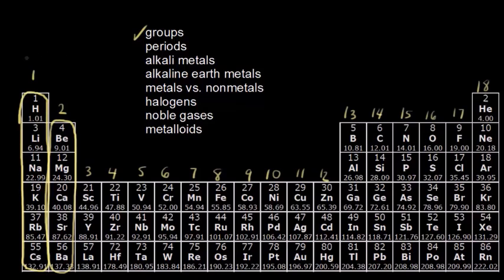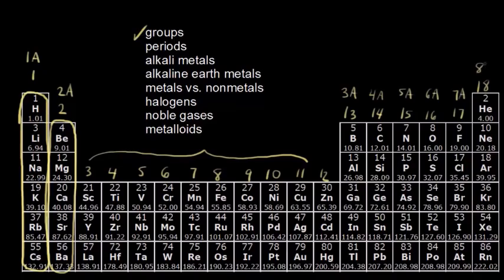Group one is group 1A, group two is group 2A. And then kind of ignoring groups three through 12, continue on with your numbering system. So 1A, 2A, that would make this group 3A, group 4A, group 5A, group 6A, 7A, and finally 8A. The second way of numbering your groups is useful when you're thinking about valence electrons.